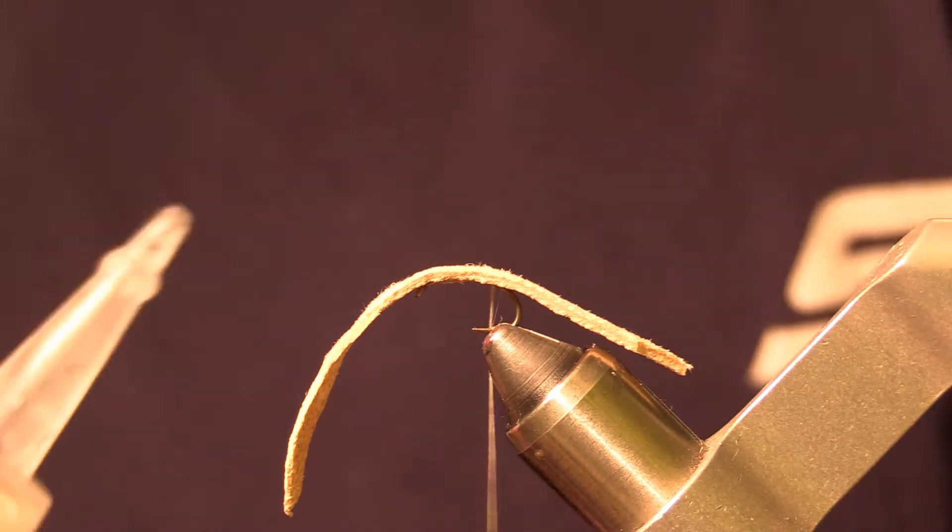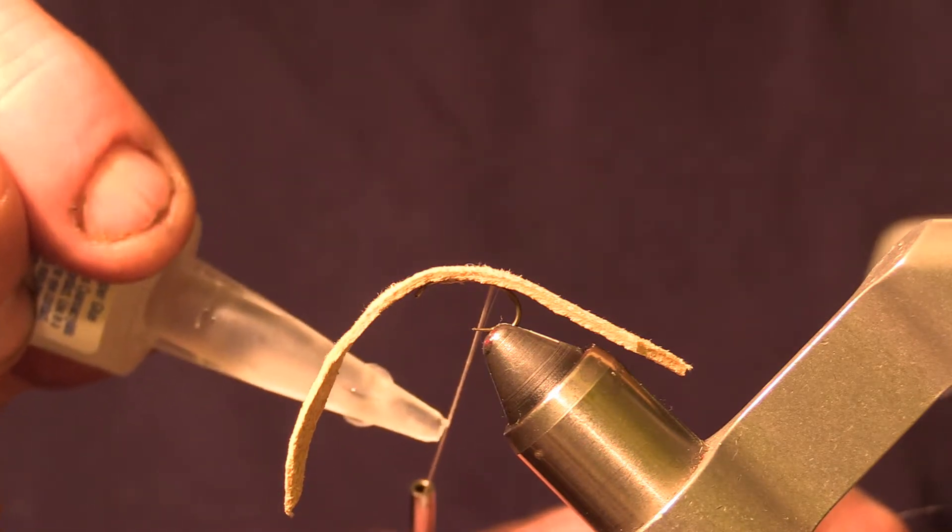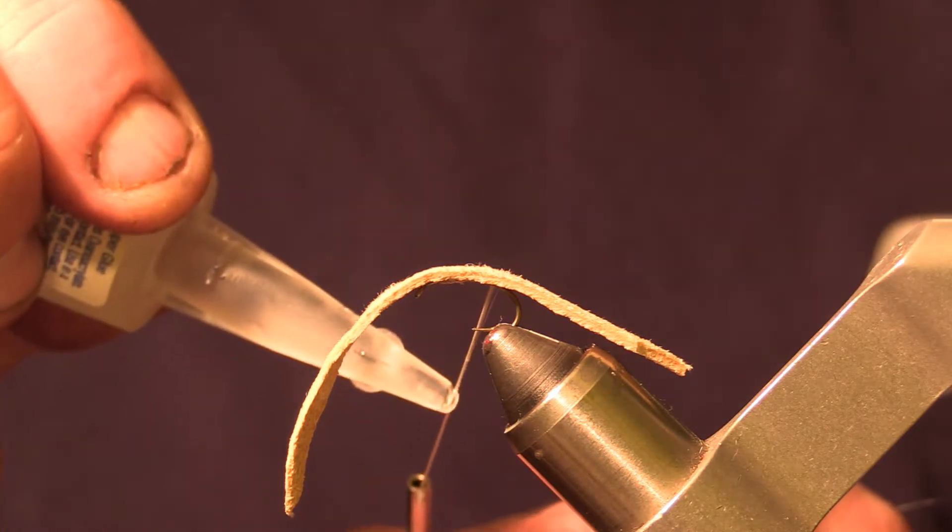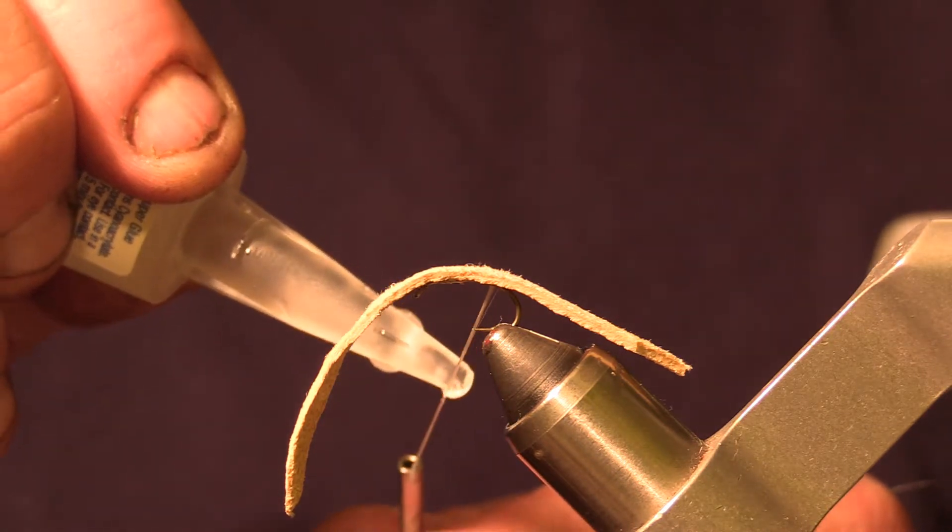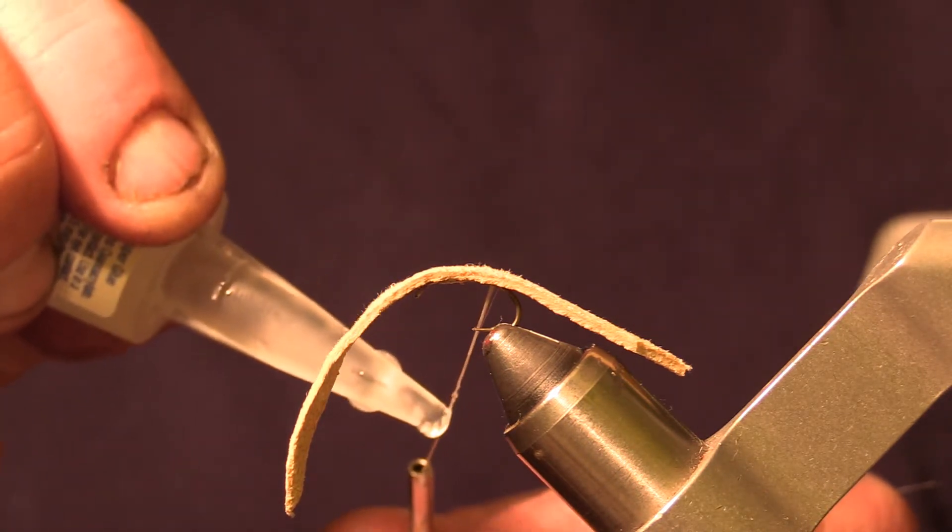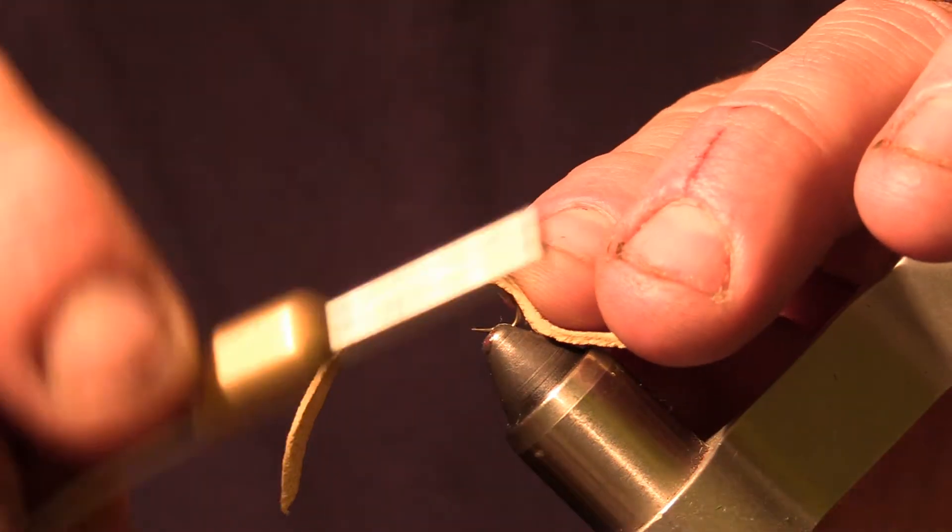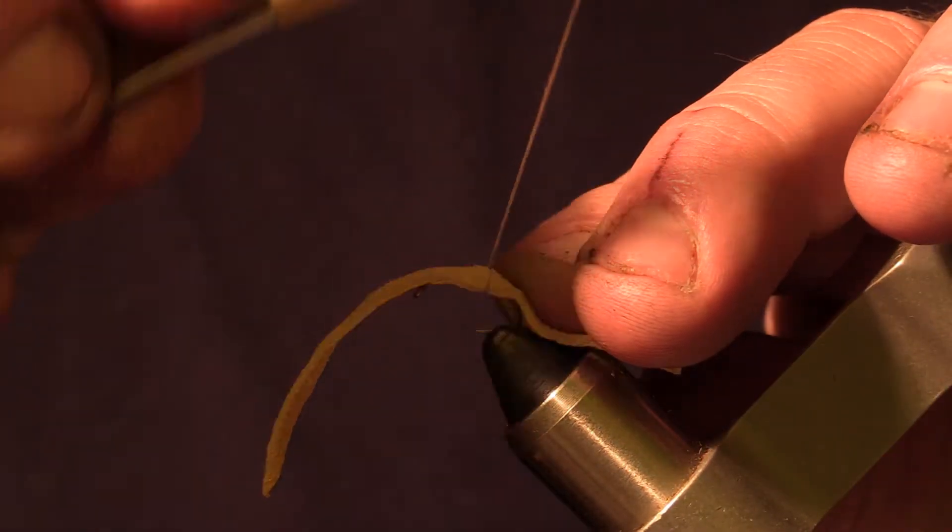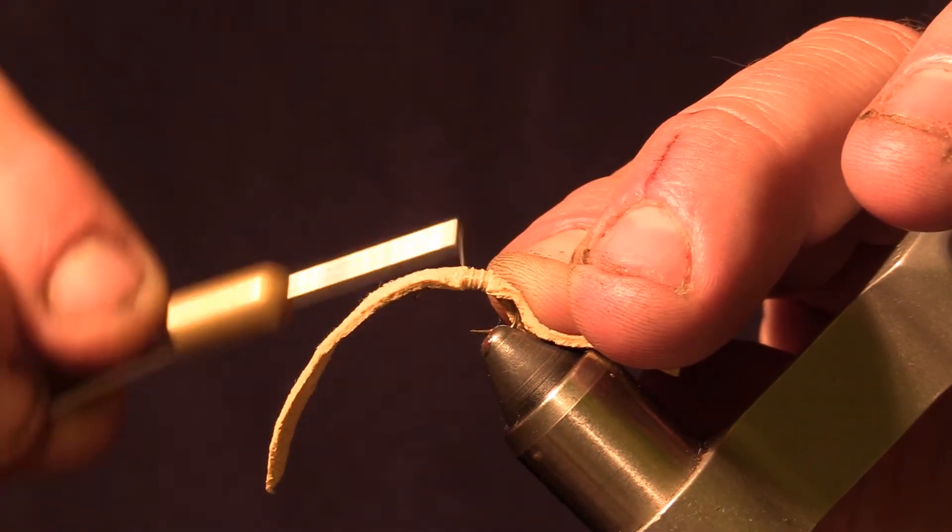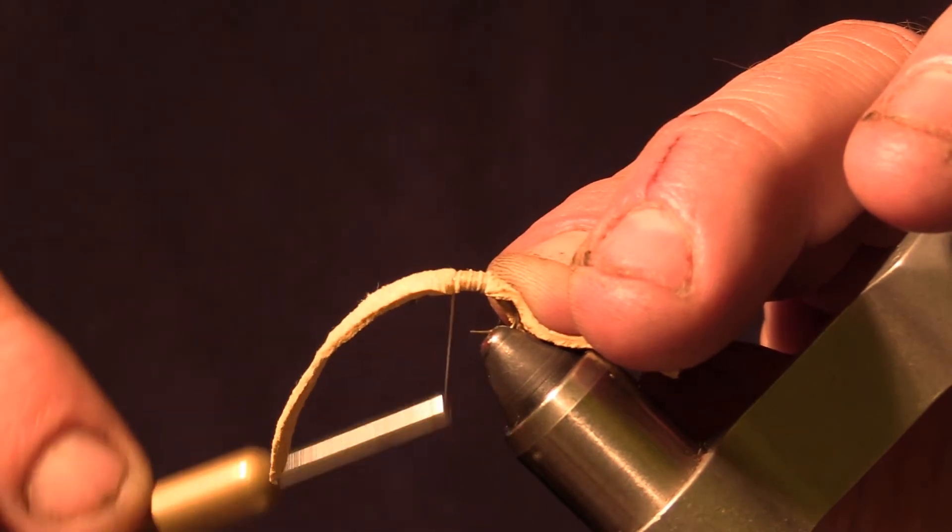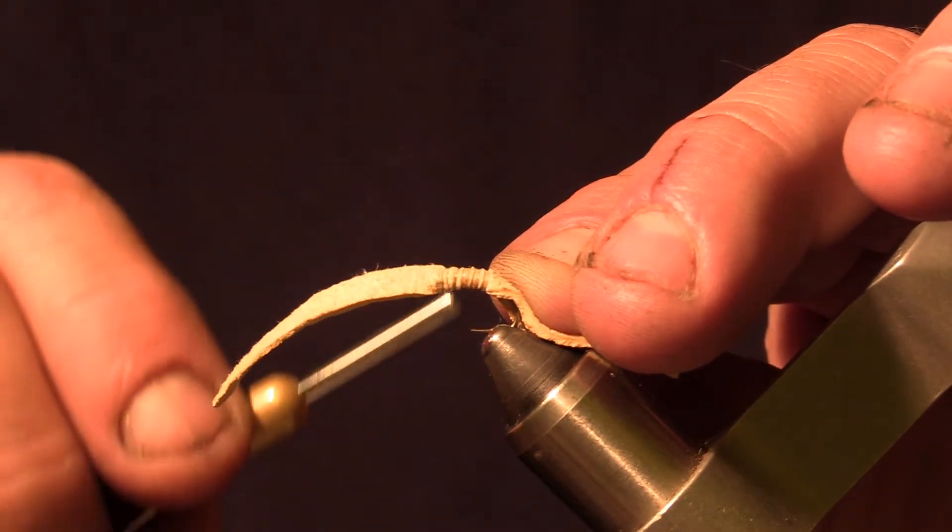And then I like to put a little bit of super glue on my thread. And it's a really durable fly. And then you just put some wraps forward, trying to keep that material on the top.